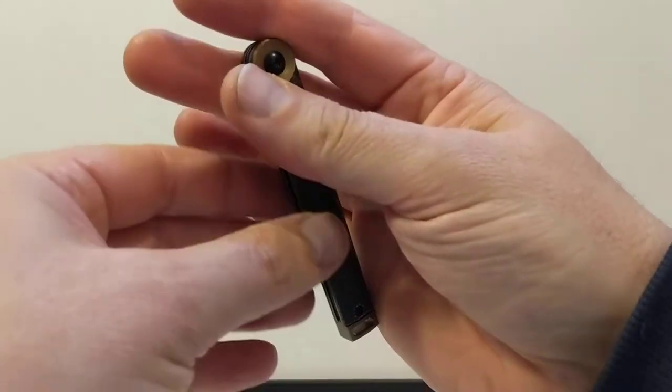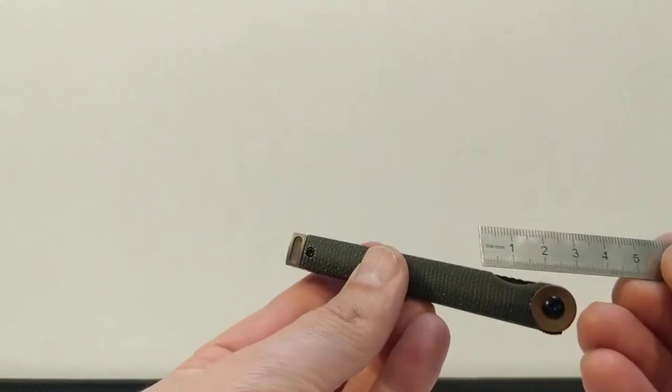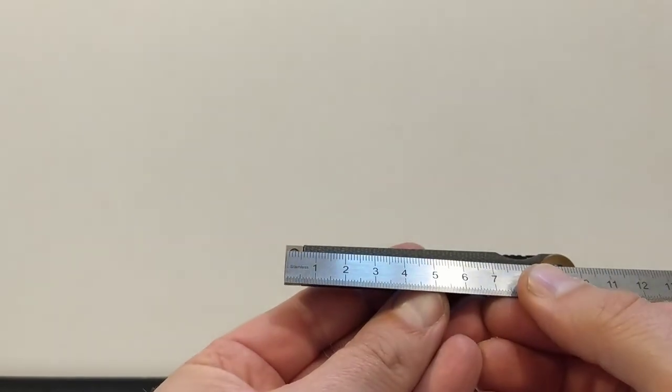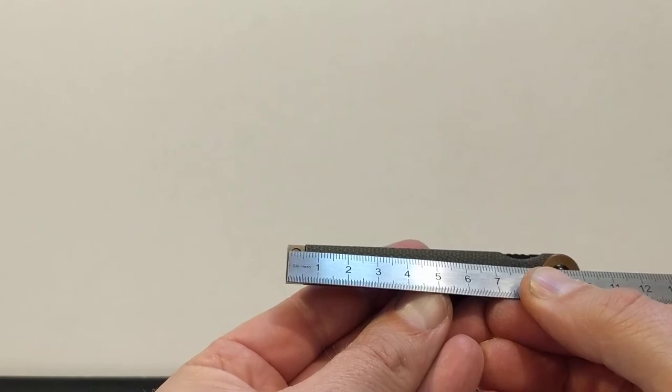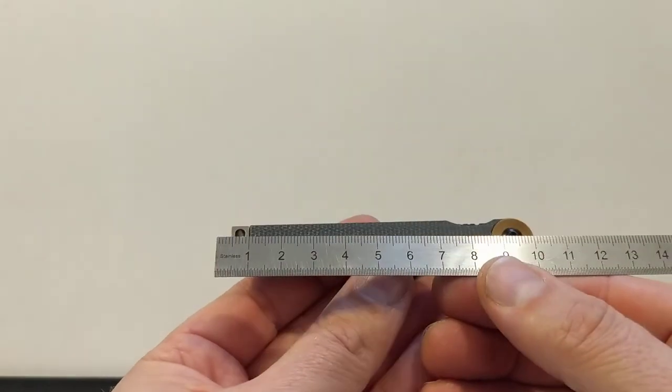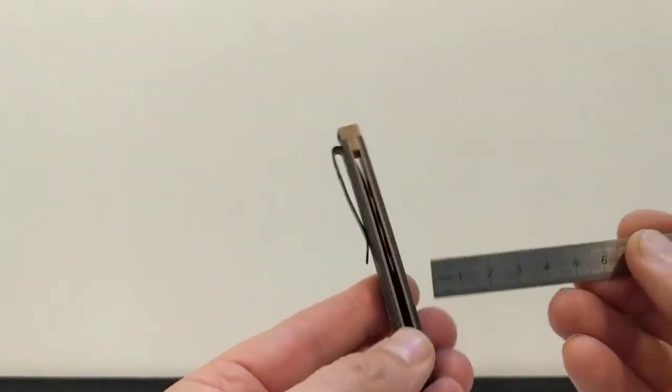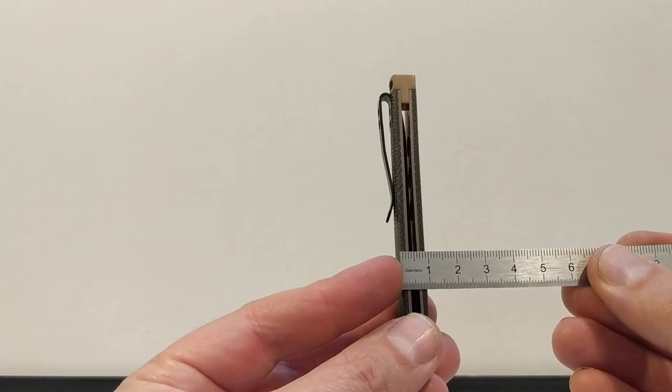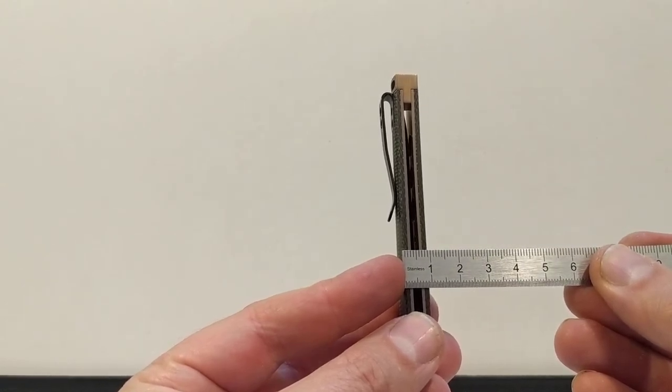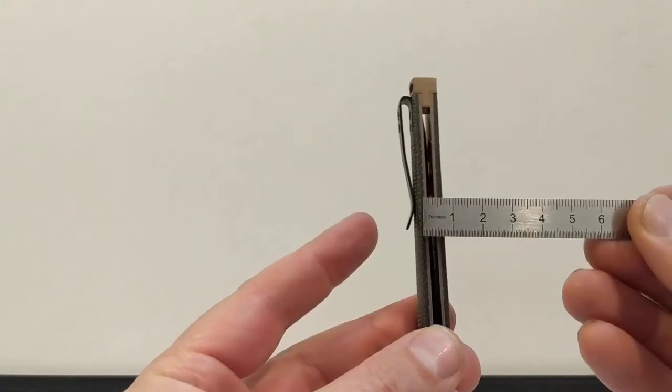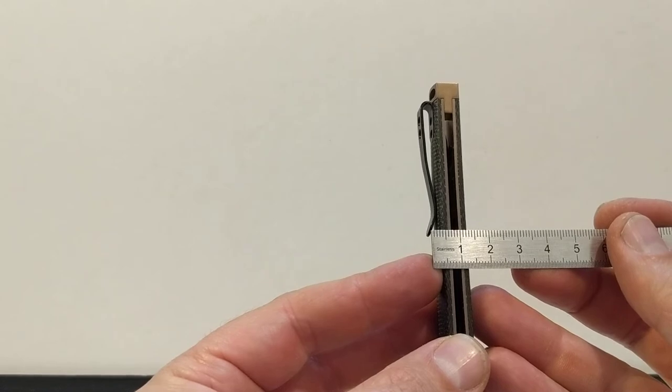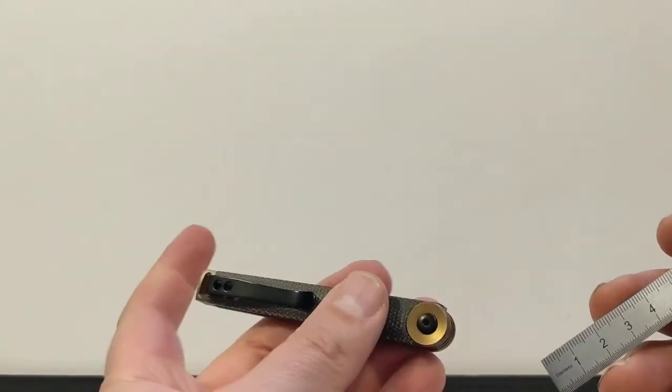So we measured the blade, didn't we? We didn't measure the handle. Let's have a look at the handle. So from one end to the other, it's 10.1 centimetres. 10.1 centimetres. Thickness, it's very thin, very slender. It's 1 centimetre. But if we were to go widest point, including the clip, it's 13 millimetres. I mean, that's kind of irrelevant, isn't it?